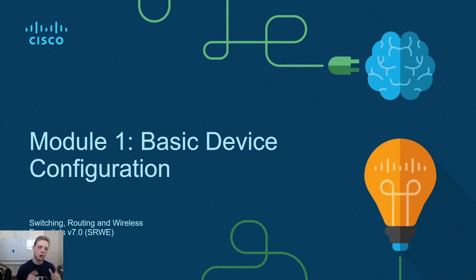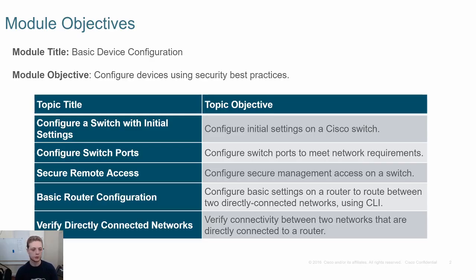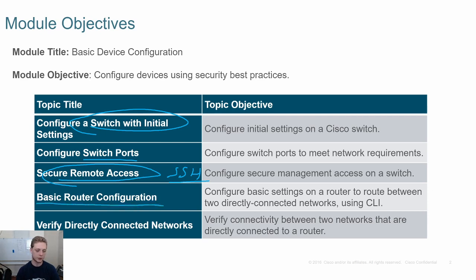Hi and welcome to CCNA2. We're going to start with Module 1 and jump right into basic device configuration. You should be familiar with a lot of this — it really should be review. We're going to talk about initial settings for switches, configuring switchboards, remote access like SSH or Telnet — hopefully SSH — some basic router configuration, and verification of connected devices using LLDP or CDP.